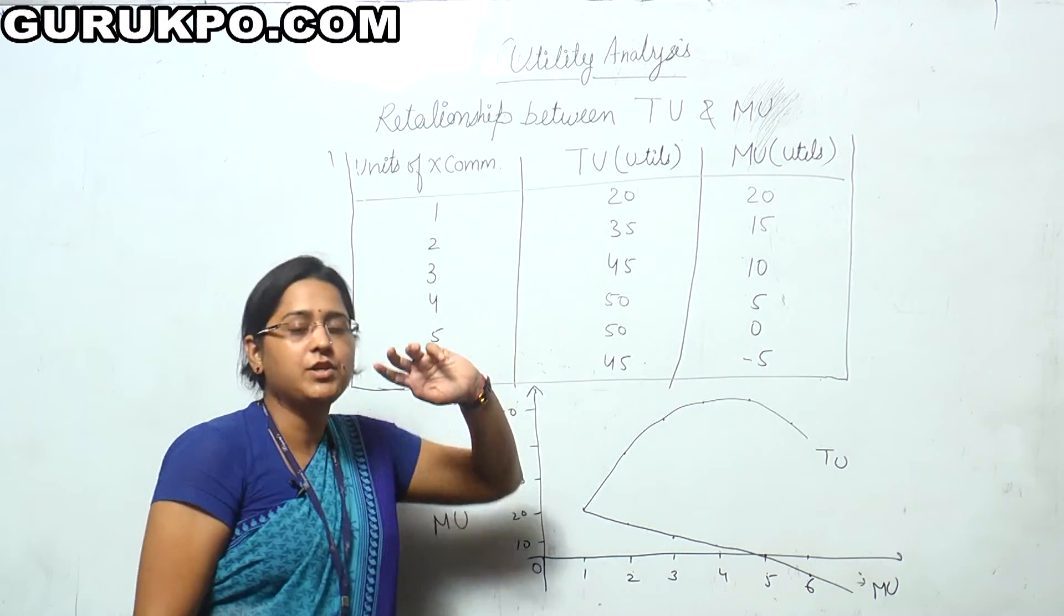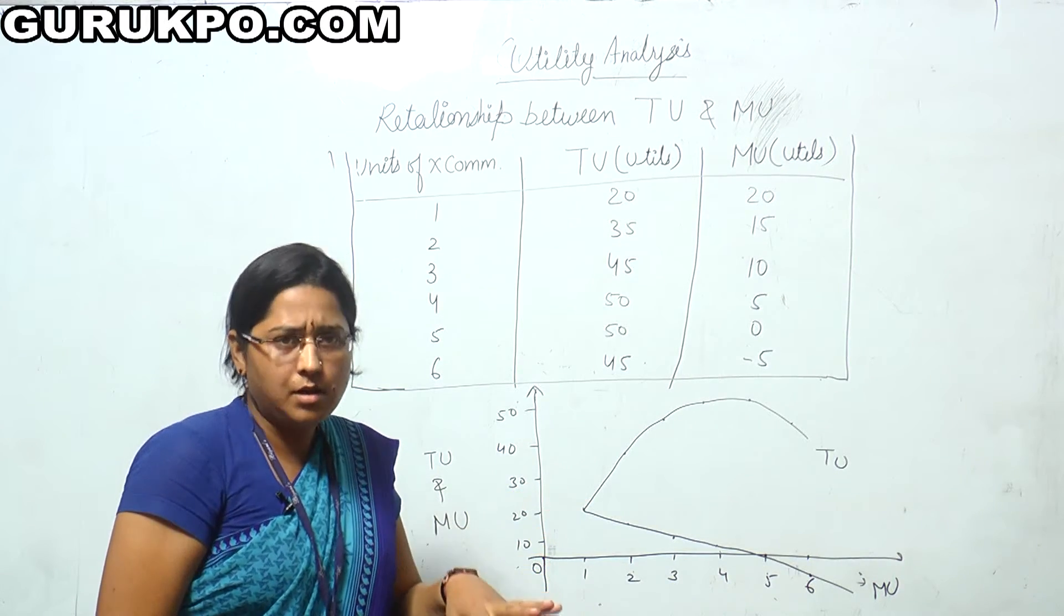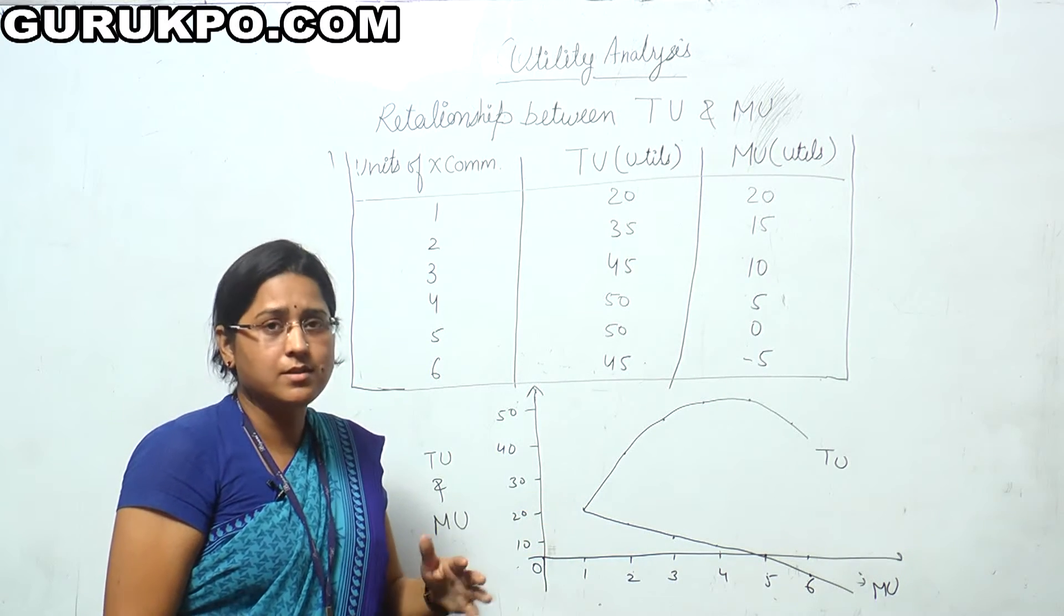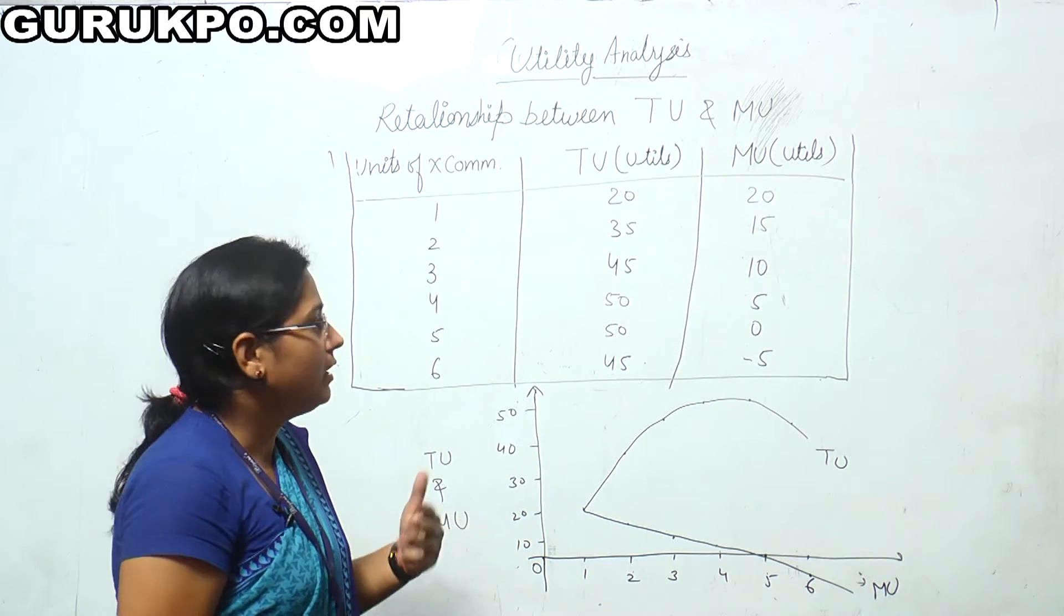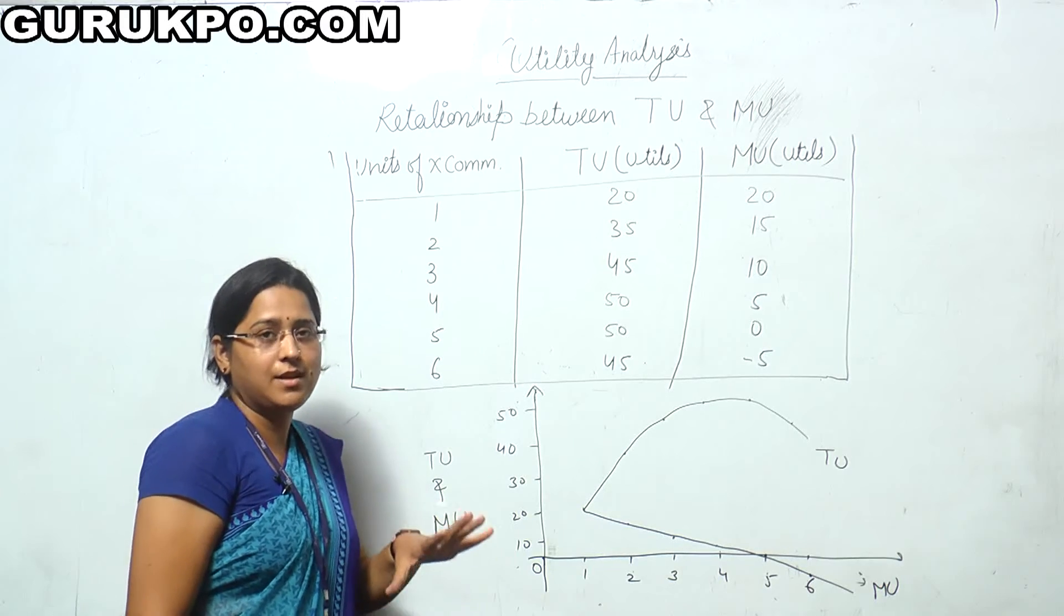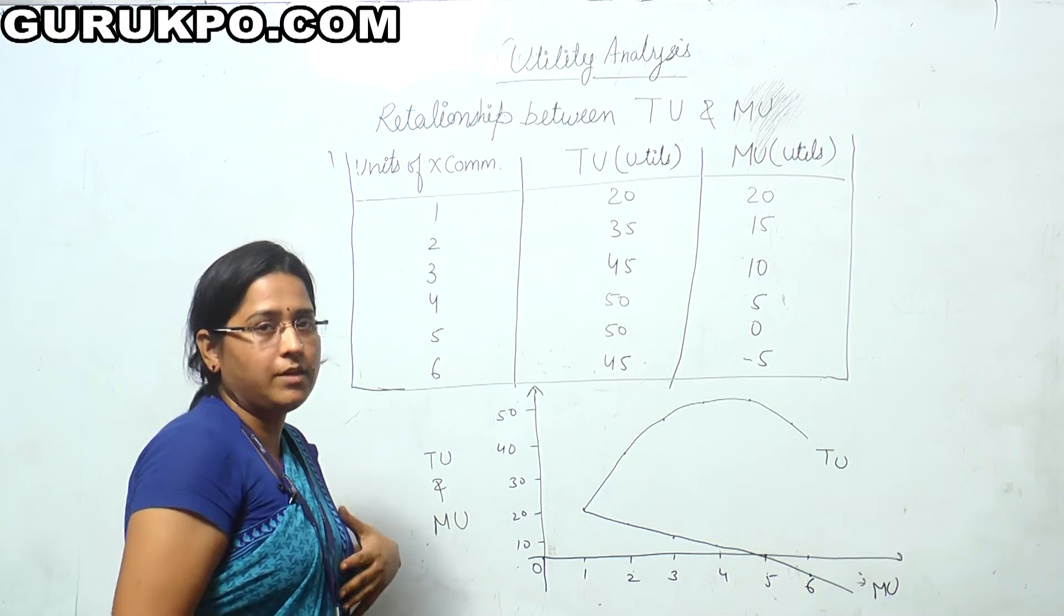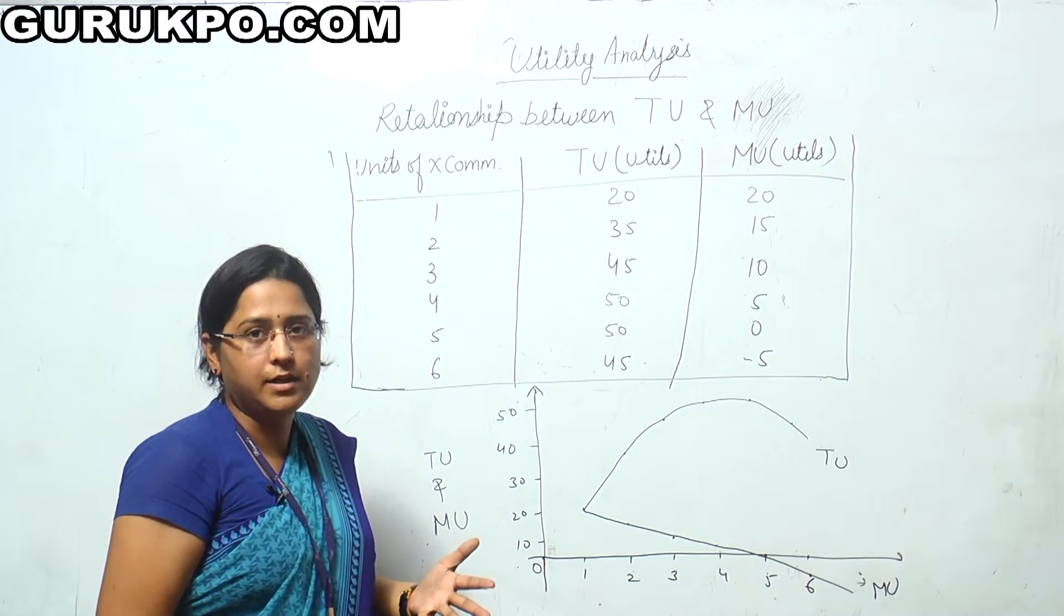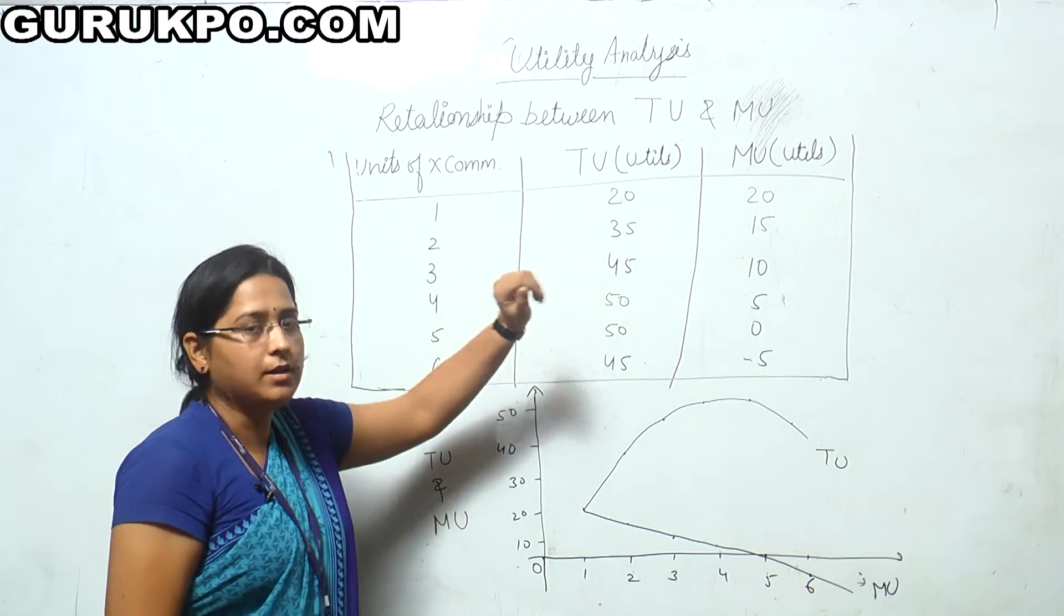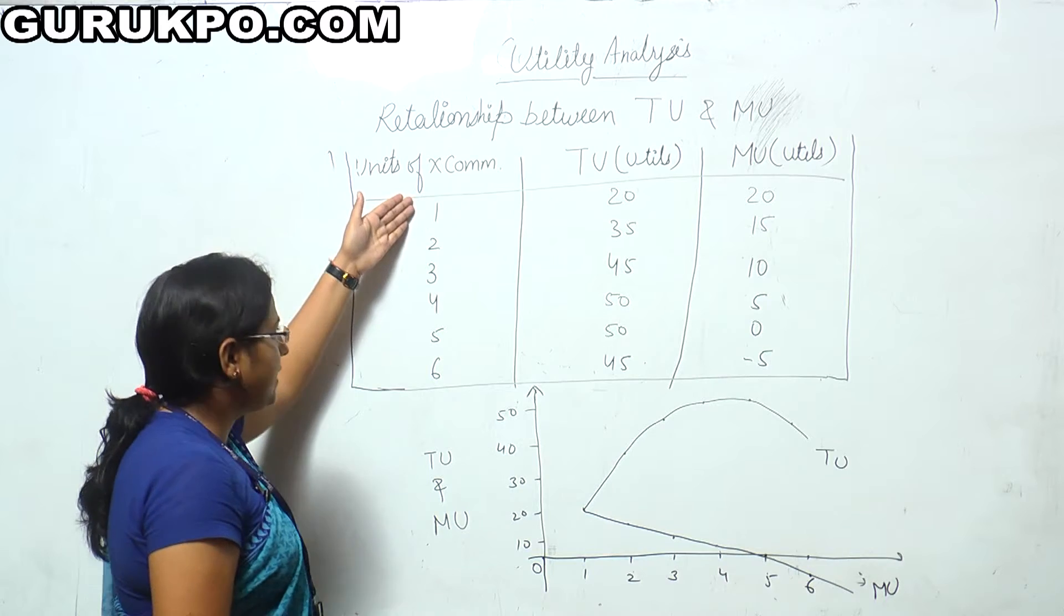Although we can't measure the utility in numbers or give numbers to them because it is a psychological concept, Marshall has measured it in utils. That's why, for convenience sake, so that we can measure or define the utility, we have measured it in utils.